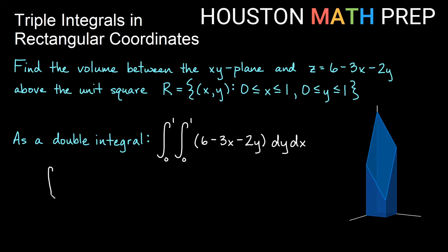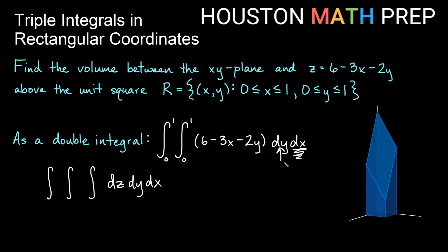Now we're setting this up as a triple integral in the order dz dy dx. Remember how we found bounds with double integrals — we'd fix an outer variable and draw through the region in the increasing direction of the inner variable. With a triple integral integrating dz first on the inside, we fix some x and y value and draw through in the increasing z direction to find our bounds.